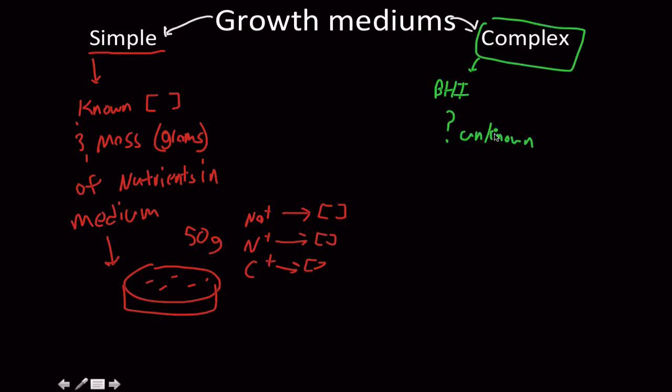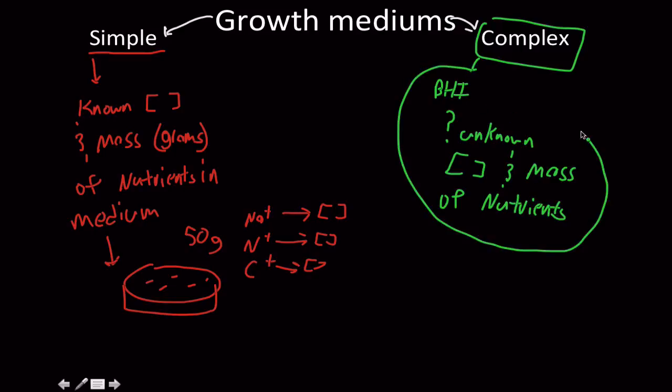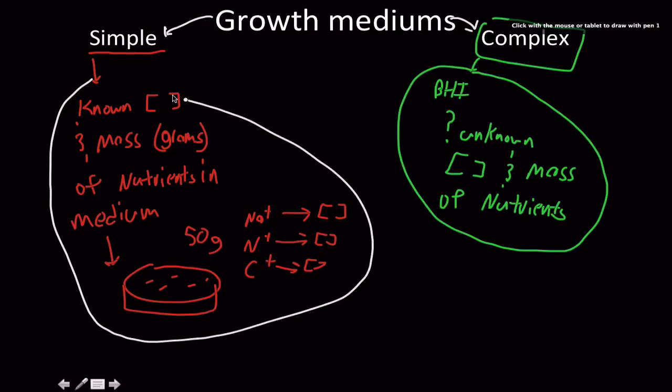yeast type of solutions, things like that, that we, the grass compounds, a known concentration and mass of the nutrient contents. If I have a plate of blood auger, I don't know how much glucose or anything like that is in it,